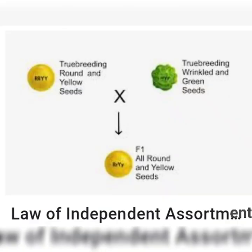The last one is the Law of Independent Assortment. In this, when there are two pairs of contrasting characters, the distribution of the members of one pair into gametes is independent of the other pair — it does not depend on the other and each shows its own character. This is a brief description of Mendel's Law of Inheritance.